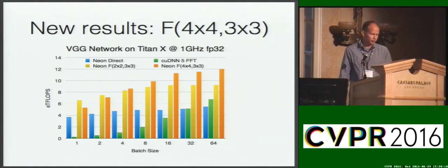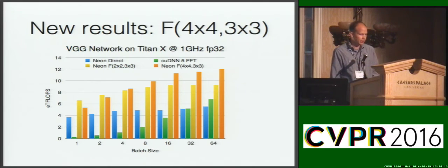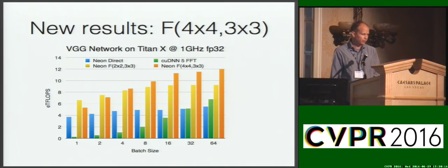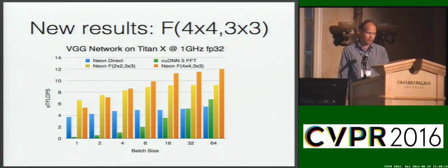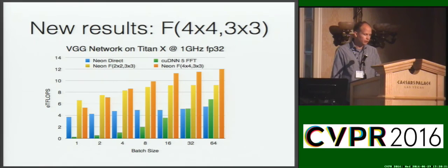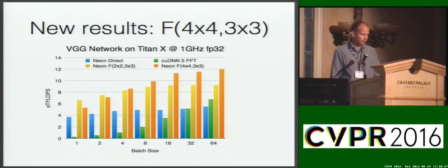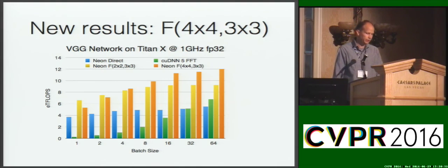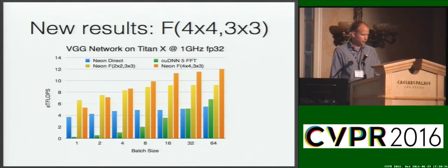Here are some new results comparing our new 4x3 Winograd implementation with the FFT algorithm from CU DNN version 5. 4x3 Winograd is the fastest algorithm for batch size 8 and larger. CU DNN version 5.1 also implements both 2x3 and 4x3 Winograd, so the algorithms proposed in our paper are now the fastest convolution algorithms in production in both NVIDIA CU DNN and the Nirvana NEON framework.